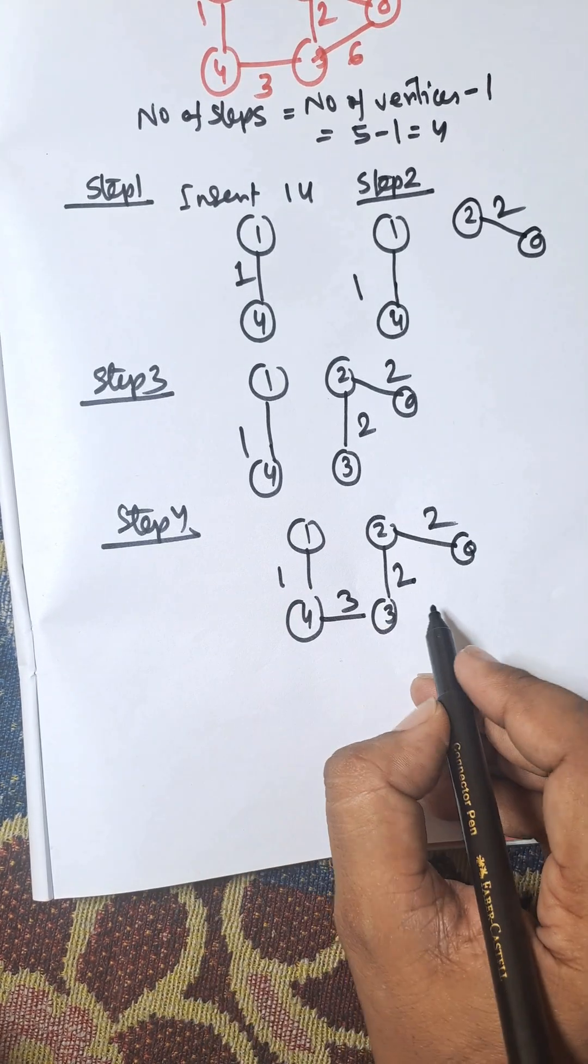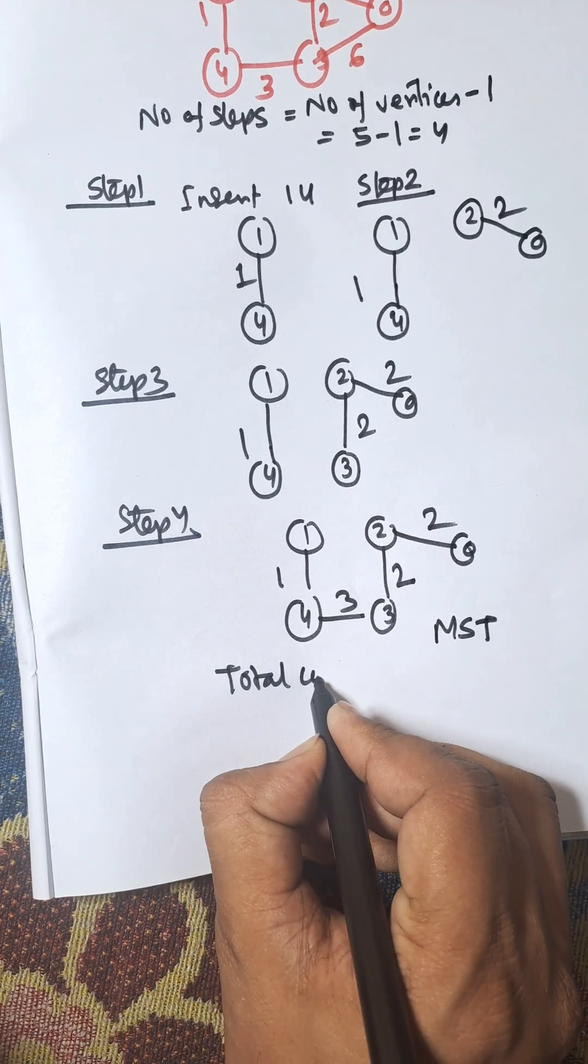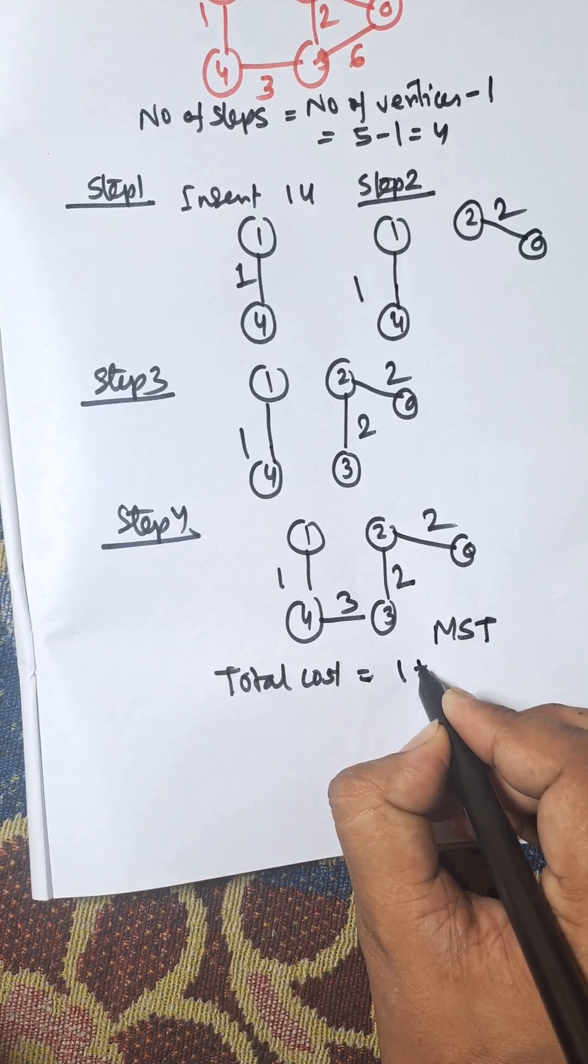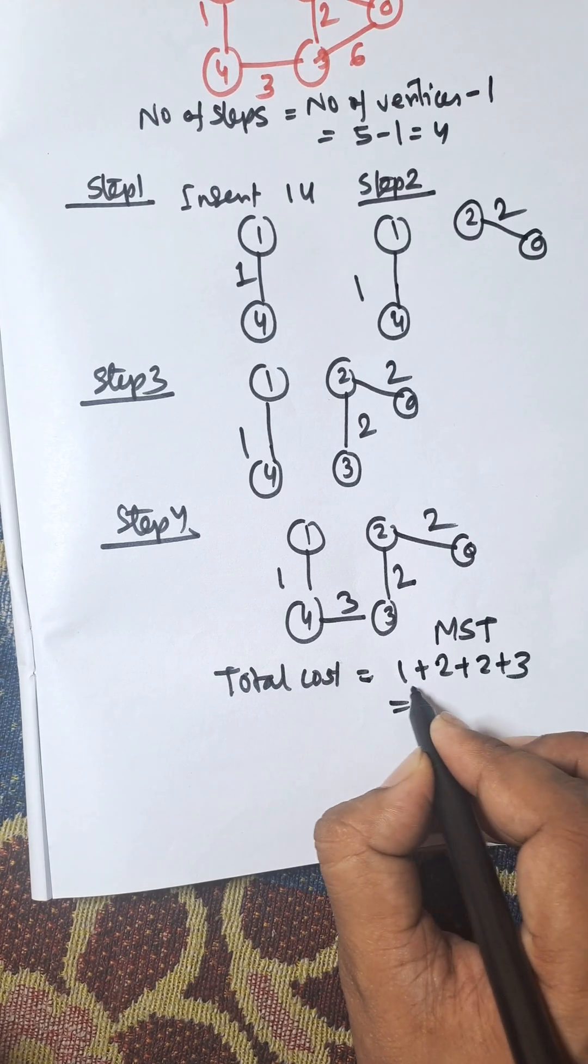This is known as the minimum cost spanning tree using Kruskal's algorithm, and the total cost is 1 plus 2 plus 2 plus 3, which equals 8.